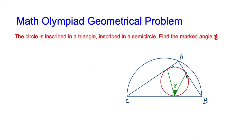The sides AB, BC, and CA are tangents which intersect the inscribed circle at points T, E, and F. To find angle gamma, we suppose that angle DEB is x degrees and angle FED is equal to y degrees.